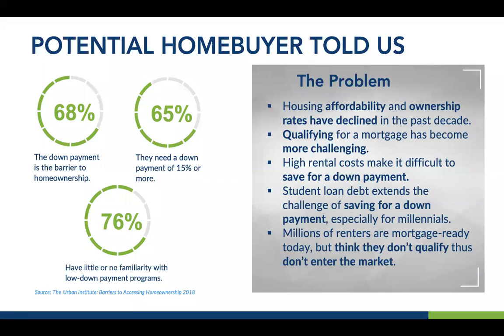That leads to the third question: when asked how familiar they were with low down payment programs, more than three-quarters had little or no familiarity. So potential homebuyers struggle with the down payment, see it as their biggest barrier, think they need 15 or 20% down — and they are clearly not familiar with FHA, conventional, VA, or down payment assistance programs. How are they going to find out? Through you.